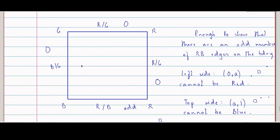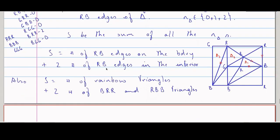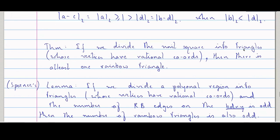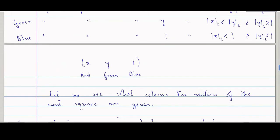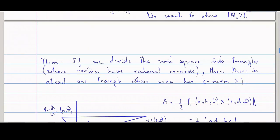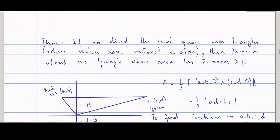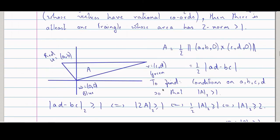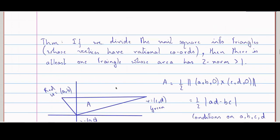So there is a rainbow triangle. And having a rainbow triangle means the area satisfies the condition. This is the theorem we have proved: when we divide the unit square into triangles, there is a rainbow triangle using Sperner's Lemma. And once we have a rainbow triangle, the theorem is proved — there is a triangle whose area has 2-adic norm greater than one. And this theorem implies Monsky's theorem.